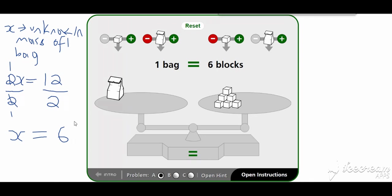Observing the pattern: we are solving the equation by doing the opposite operation of what we had initially. When we had x plus three, to get x we subtracted three from both sides. Now that we have 2x equals twelve, to get x we divide both sides by two. We are doing the opposite operation from a procedural perspective.